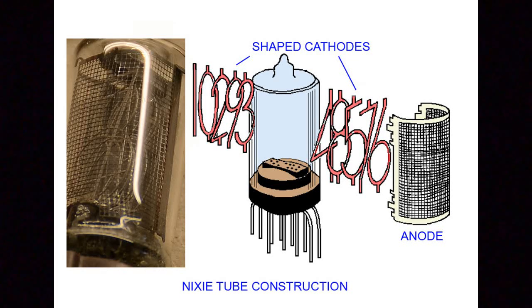Like a neon bulb, the Nixie tube first needs a high striking voltage but will then stay illuminated at a lower voltage. While small neons should strike at well under 100 volts, the Nixie usually needs a little bit higher than that.